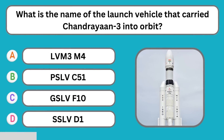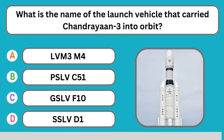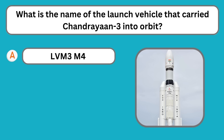What is the name of the launch vehicle that carried Chandrayaan 3 into orbit? LVM3M4, Launch Vehicle Mk3.